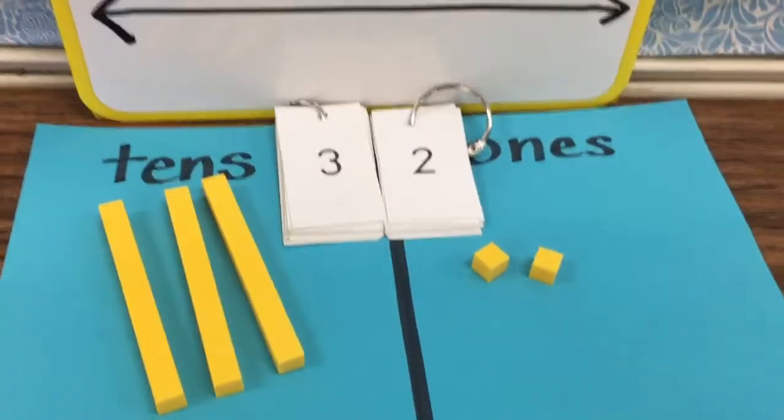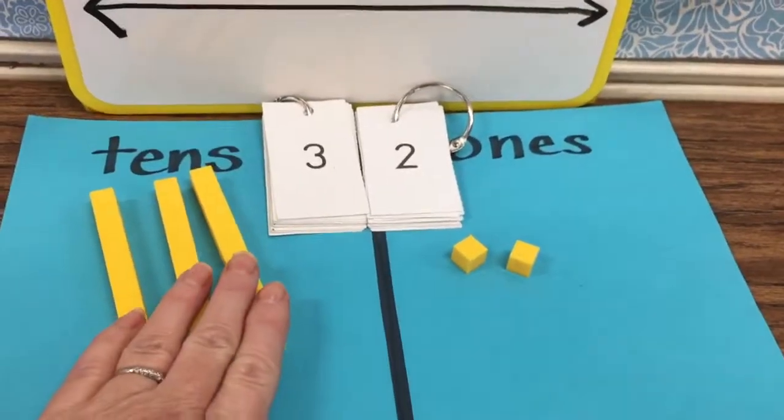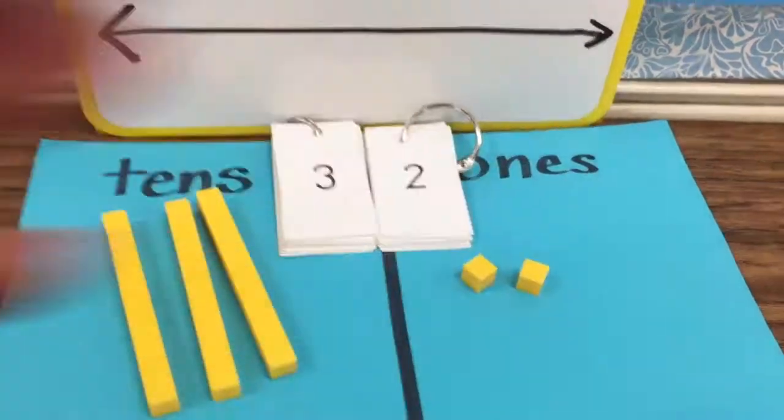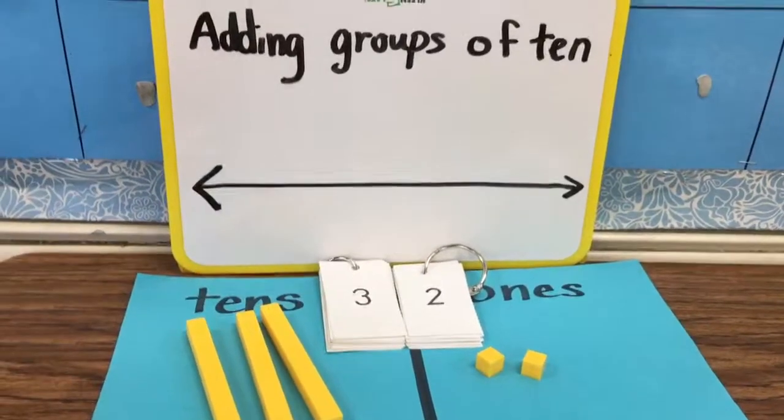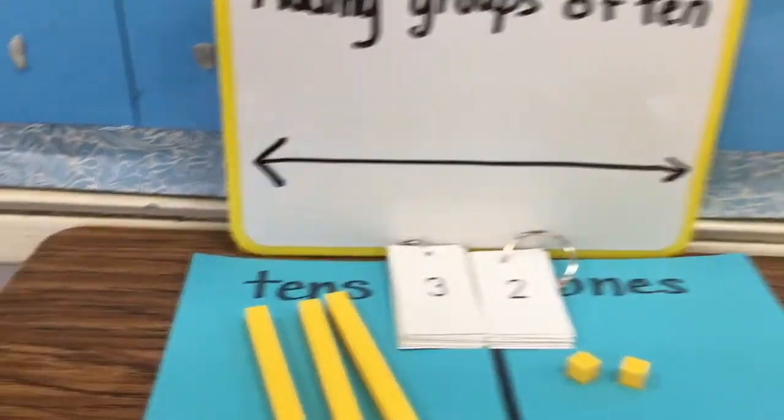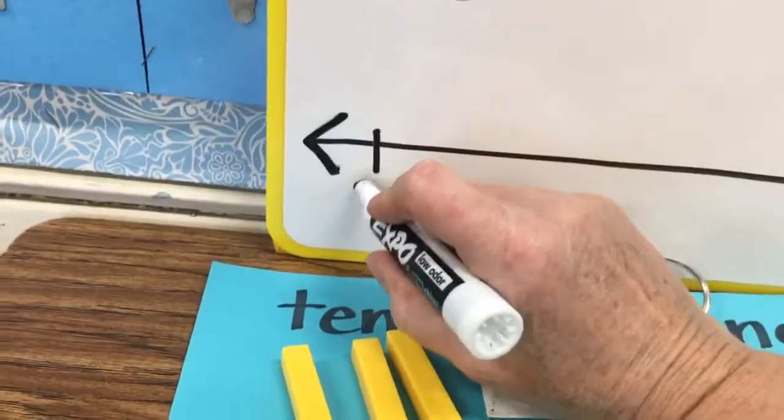Here you see we have represented three tens and two ones. We're going to look at how this happens on an open number line, as well as with manipulatives.